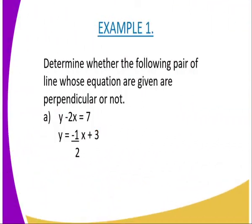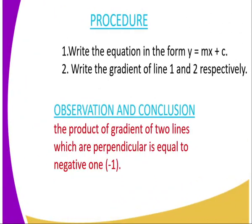We go to example number one. You are supposed to determine whether the following pair of lines whose equations are given below are perpendicular or not. The first equation reads: y minus 2x equals 7, and the second equation of the second line is given as y equals negative one-half x plus 3. Procedure: write the equation of the line in the form y equals mx plus c.